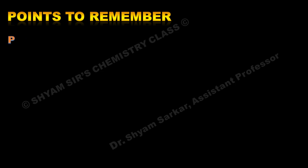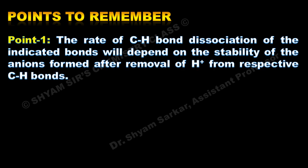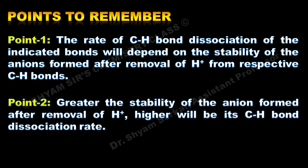To explain this answer, you have to remember two points. Point number one: the rate of C-H bond dissociation of the indicated bonds will depend on the stability of the anions formed after removal of H⁺ from the respective C-H bonds. Point two: greater the stability of the anion formed after removal of H⁺ ion, higher will be its C-H bond dissociation rate.